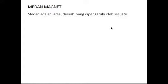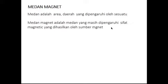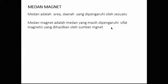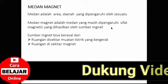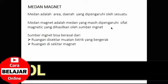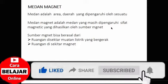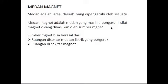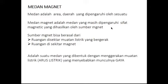Medan magnet artinya apa? Medan itu sendiri adalah area atau daerah yang dipengaruhi oleh sesuatu. Medan magnet adalah medan yang masih dipengaruhi oleh sifat magnetik, dimana sifat magnetik ini dihasilkan oleh sumber magnet. Sumber magnetnya bisa berasal dari ruangan di sekitar muatan listrik yang bergerak, di sekitar magnet permanen, atau magnet buatan yang hanya sementara. Video ini akan membahas medan magnet yang dihasilkan oleh arus listrik, yang mana nanti muncul suatu gaya.